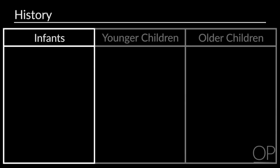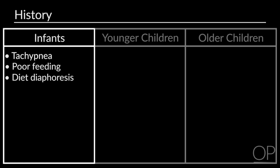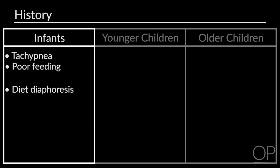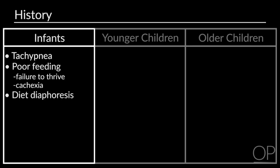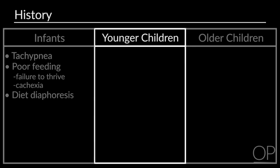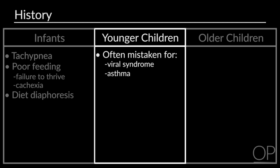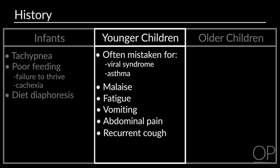In infants, a common presentation of heart failure is tachypnea, poor feeding, and diaphoresis. Their inability to feed adequately results in poor weight gain, and many present with failure to thrive and cachexia. In younger children, heart failure is often mistaken for a viral syndrome or asthma. Signs and symptoms can include malaise, fatigue, vomiting, GI pain, and recurrent cough.